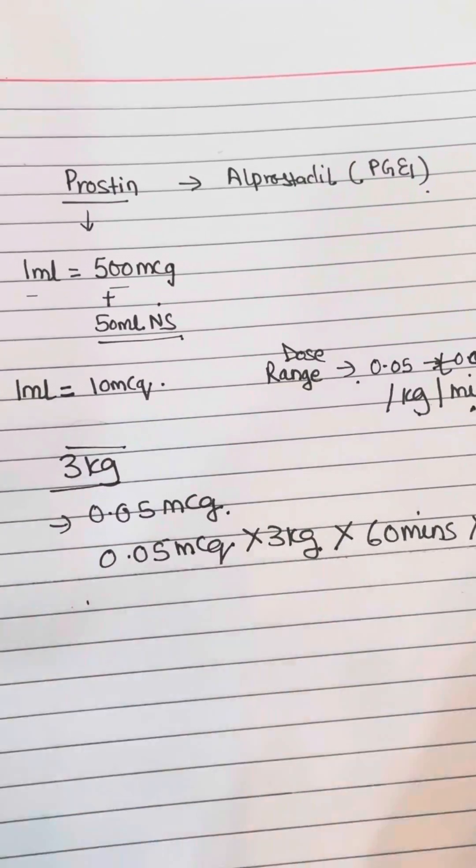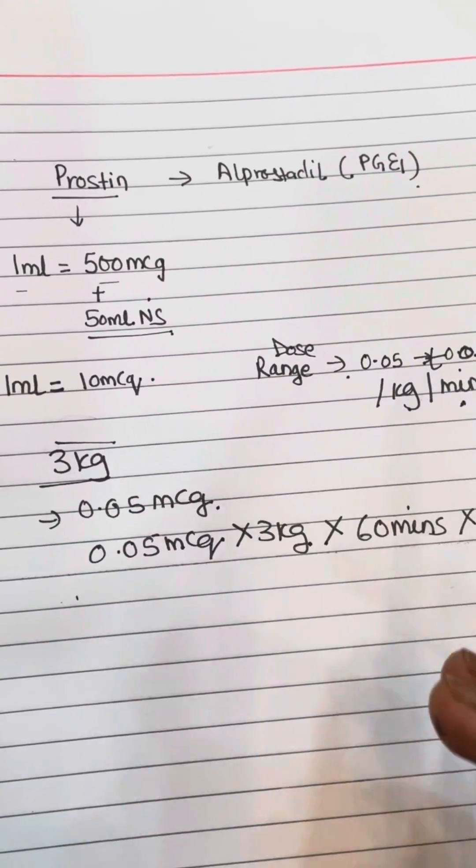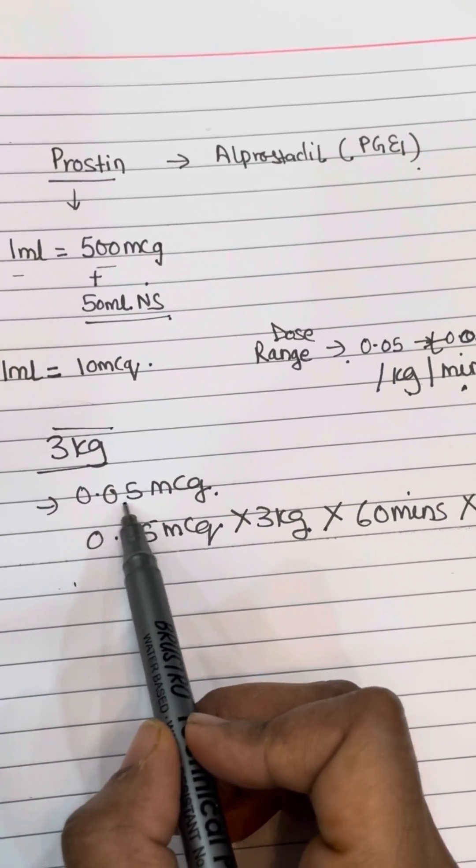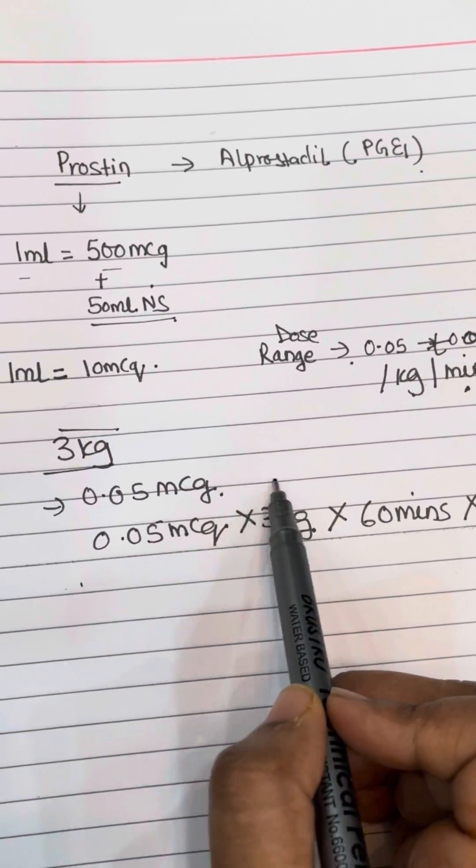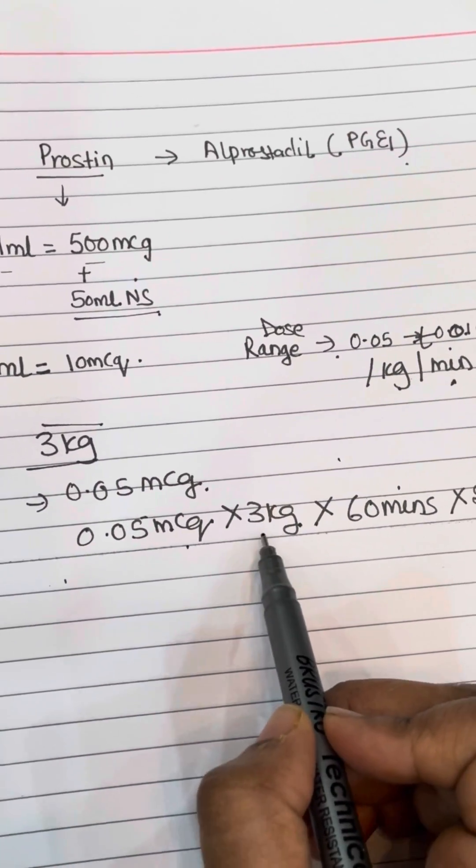...a left-sided heart problem where you need to keep the duct patent. You want to start with the lower dose, 0.05 microgram per kg per minute. So 0.05 into the weight of the baby...